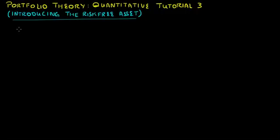In this tutorial, we will introduce the risk-free asset in our Markowitz Portfolio Optimization Framework and show the methodology to find the optimal portfolio when we have both risky and risk-free assets. Many of the calculations will be similar to those in quantitative tutorials 1 and 2 on Portfolio Theory, except that this time we will have a risk-free asset in addition to risky assets.